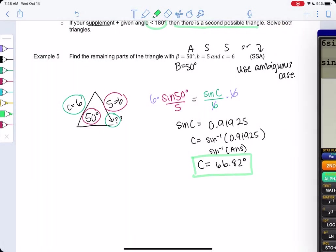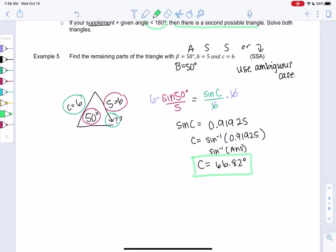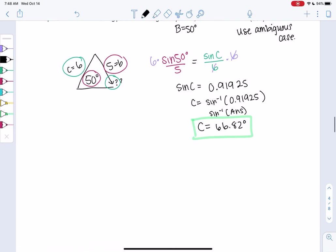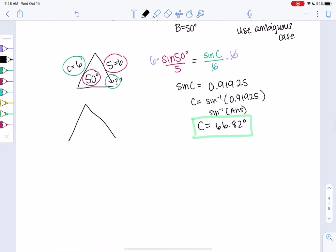So let's do 66.82 degrees. So let's find out if the supplement also works. So we've made a triangle. 50 degrees, 66.82 degrees, 6 and 5. And then the question is, could we have made a triangle there as well? That's what we're checking.